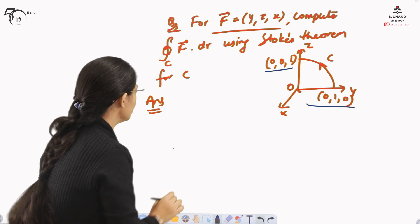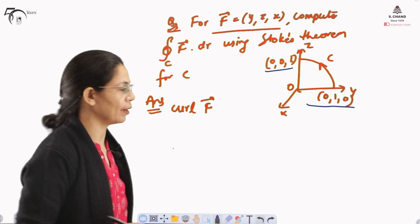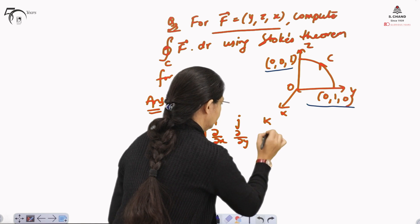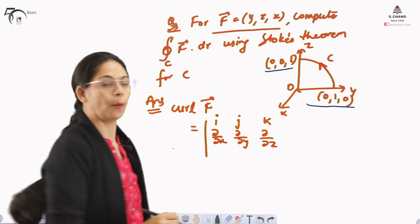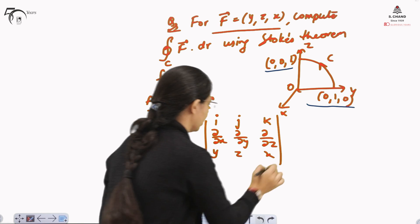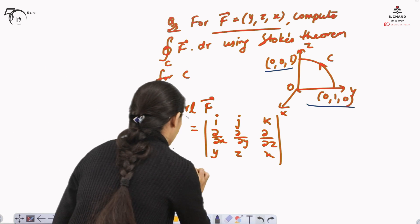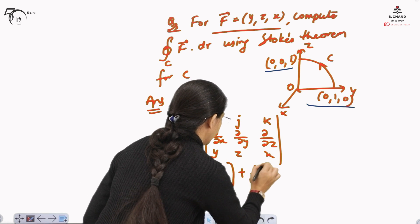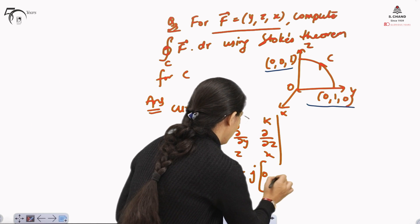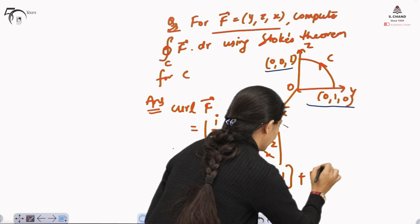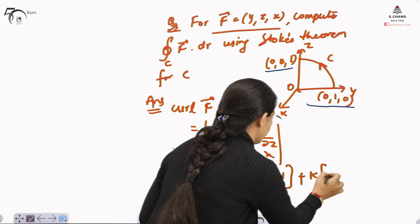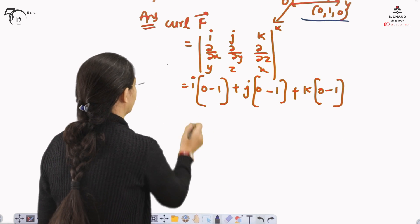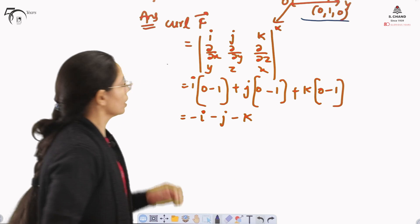We will use Stokes' theorem to calculate the integral, so first we need to find the curl of F. The curl of F is calculated using the determinant with i, j, k in the first row; ∂/∂x, ∂/∂y, ∂/∂z in the second; and y, z, x in the third. This gives: i(∂x/∂y − ∂z/∂z) + j(∂y/∂z − ∂x/∂x) + k(∂z/∂x − ∂y/∂y) = i(0−1) + j(0−1) + k(0−1). Therefore, curl F = −i − j − k.